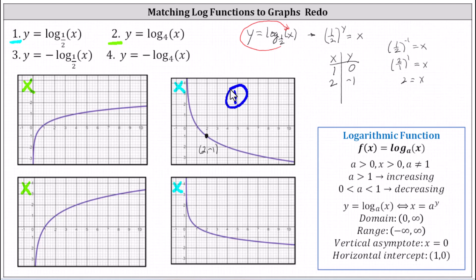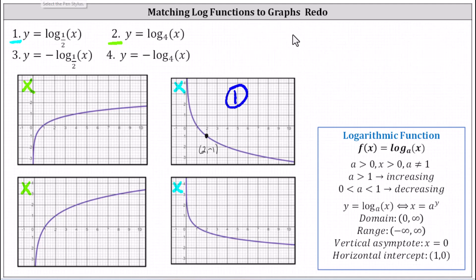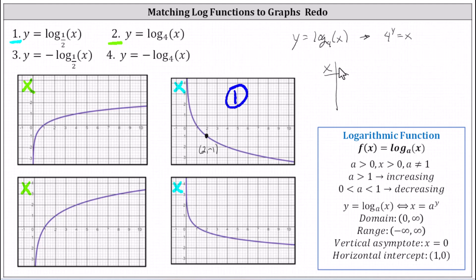Now we'll consider number two and take the same approach. We have y equals log base four of x; the equivalent exponential equation is four to the power of y equals x. We'll make a table of values and select y values. Let's select zero and one for y. When y is zero, x is equal to four to the zero, or one. When y is one, x is four to the first, or four.